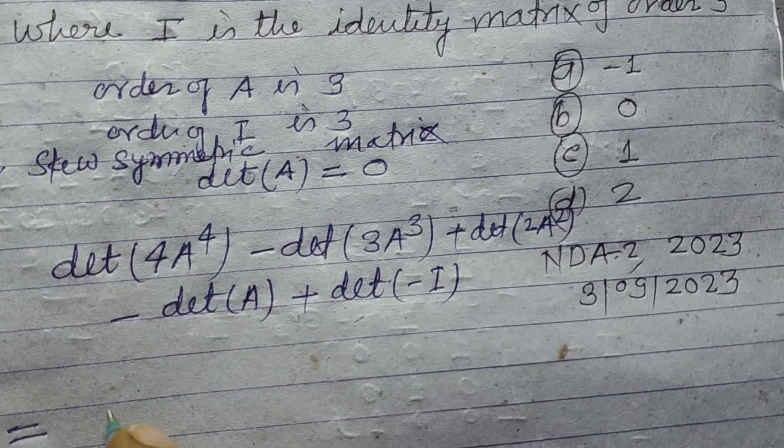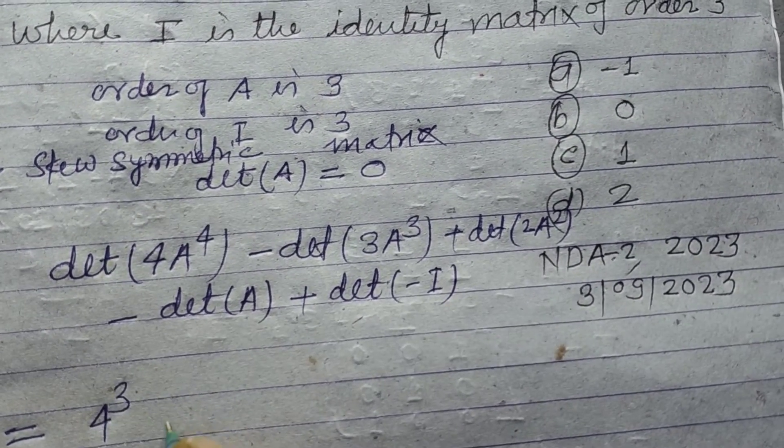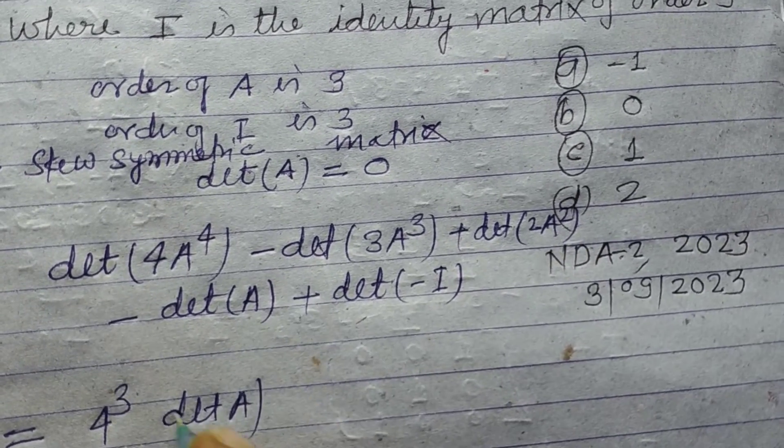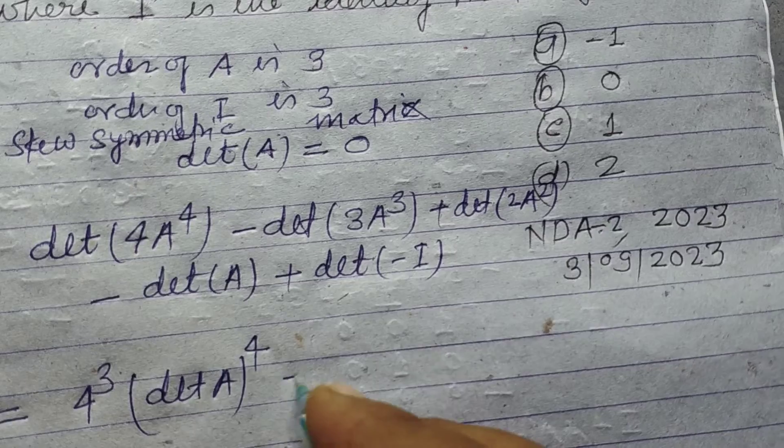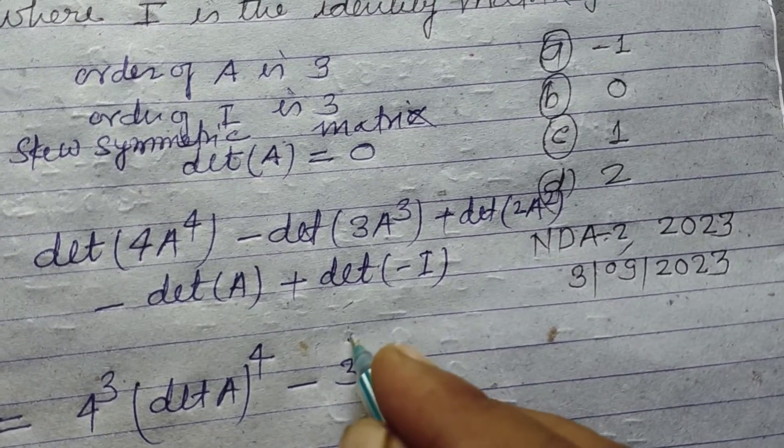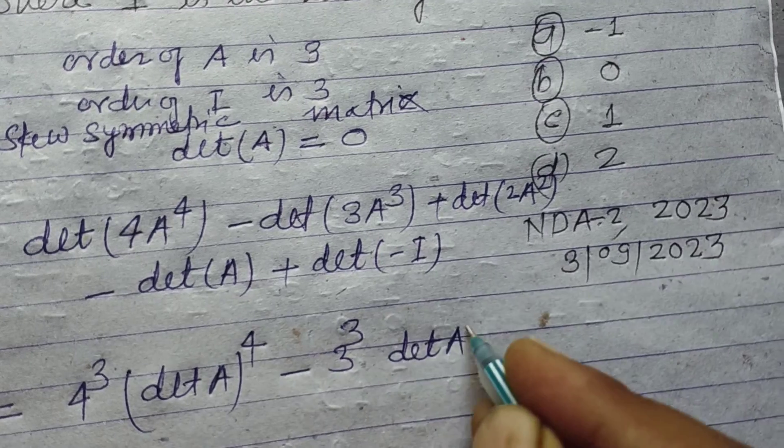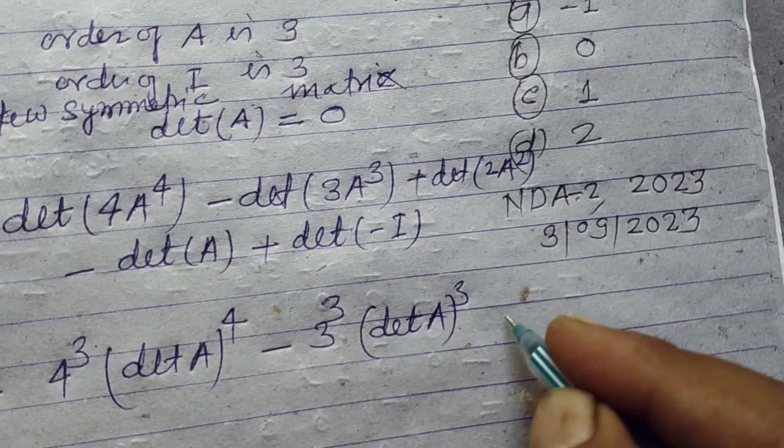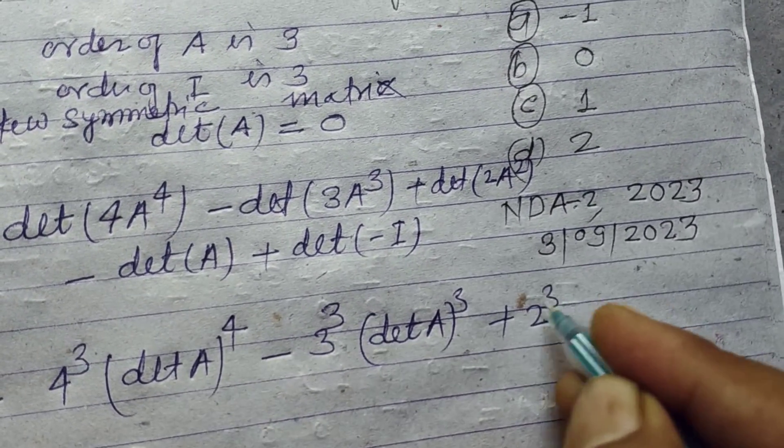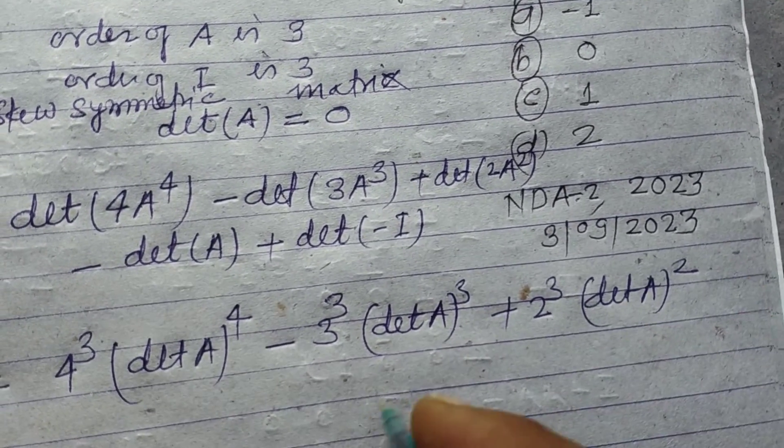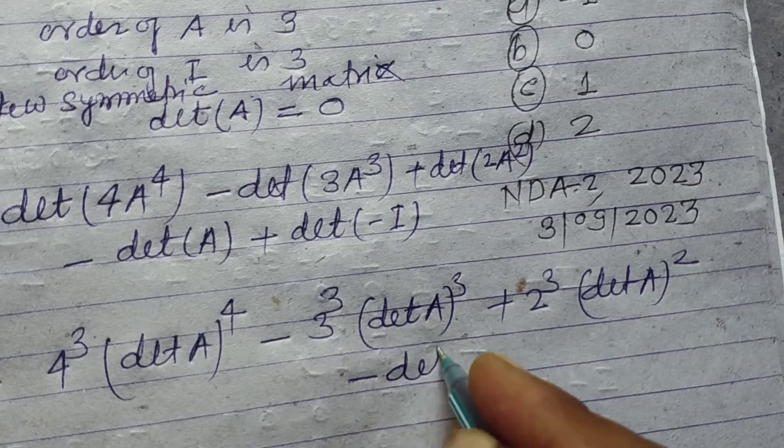This becomes 4³·det(A⁴), which equals 3³·det(A³) + 2³·det(A²) - det(A).